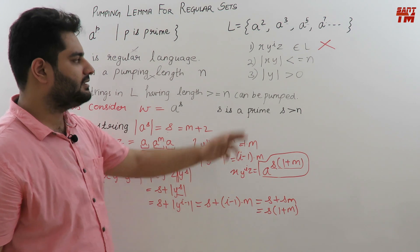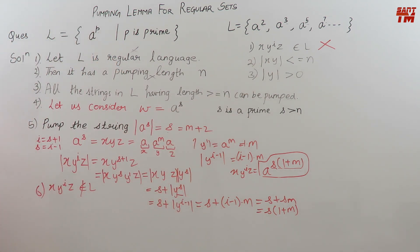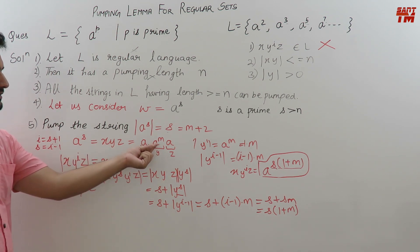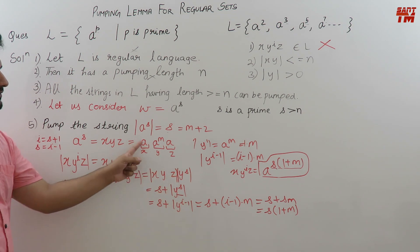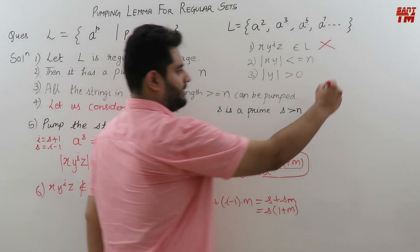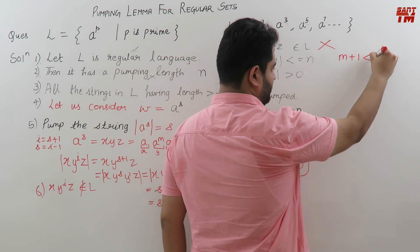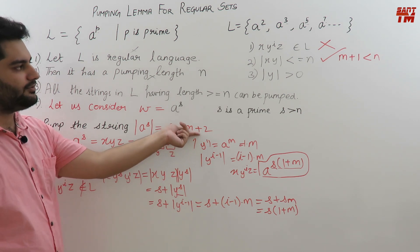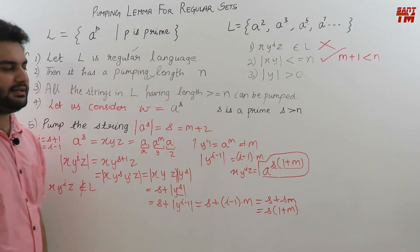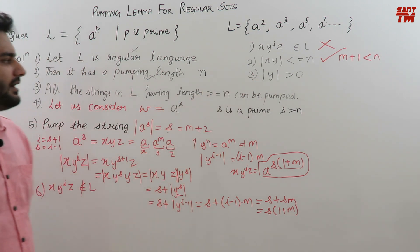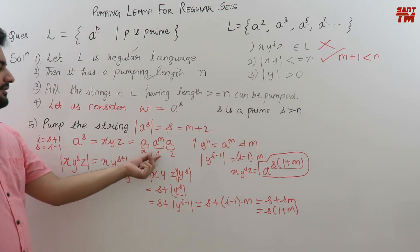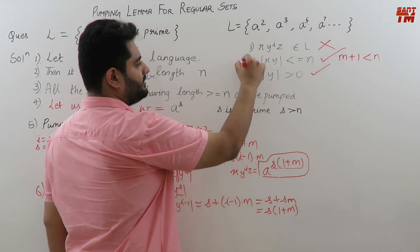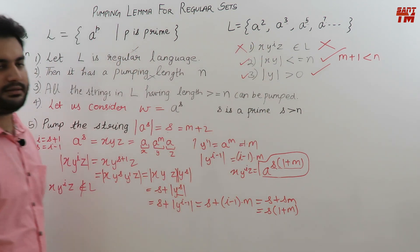Checking conditions 2 and 3: the length of XY should be less than or equal to N. We took X as 1 a and Y as M a's, so the length of XY is M + 1. Since S = M + 2, M + 1 will be less than N — condition 2 is satisfied. Condition 3 requires Y to have length greater than 0. We took Y as M number of a's and M is always greater than 0 — condition 3 is also satisfied. But condition 1 fails.